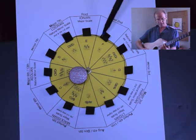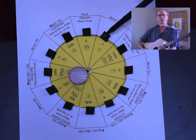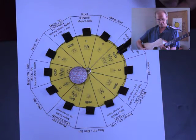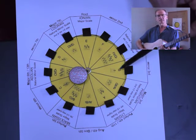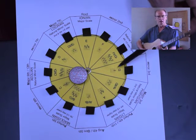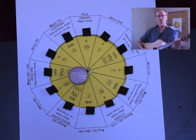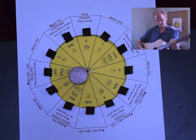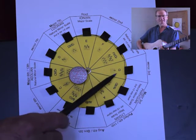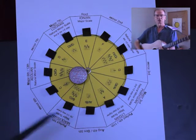F at the thirteenth fret. F sharp, G flat at the fourteenth. G at the fifteenth. And these notes are all octave above their corresponding lower octave note. So G at the third fret, and G at the fifteenth fret is the same pitch, just an octave above.